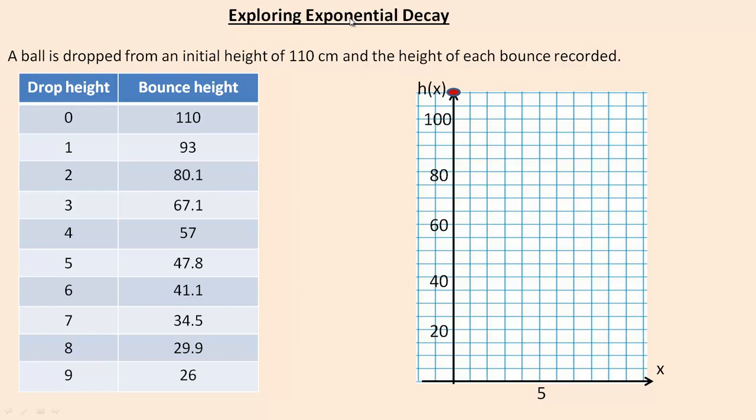They're both very much related. In this experiment, a ball was dropped from 110 cm. So the initial height, before it was dropped, was 110, and then in the first bounce it got up to 93 cm and 80.1 in the second. The third bounce was 67.1, etc, and we can see all of them.